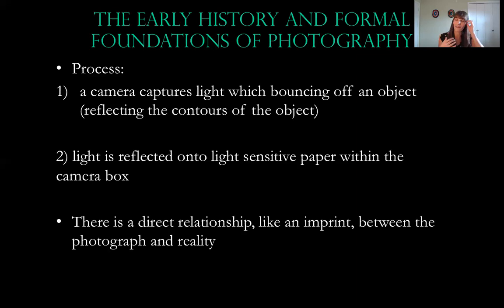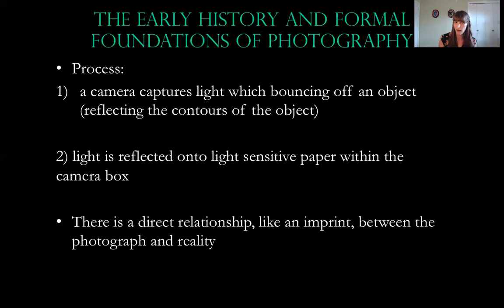The really cool thing about photography is that for the very first time in history, you could have the exact imprint of reality onto a piece of paper. The process involves the camera capturing light which bounces off of an object — all the light bouncing off of a subject is reflected into a light-sensitive paper within a camera box. There's a direct relationship, for the very first time, between what is seen and what has been printed.